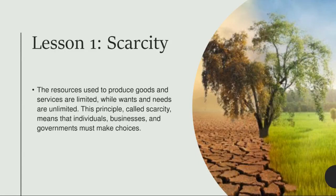Scarcity: people always have to make decisions about how to meet their needs and wants. A need is something people must have to survive, like air, food, and shelter. A want is something that people would like to have but is not necessary for survival. Economics is the study of how people choose from limited resources to meet their needs and wants. People have to make such choices because of scarcity — the limited amounts of resources to meet unlimited desires.